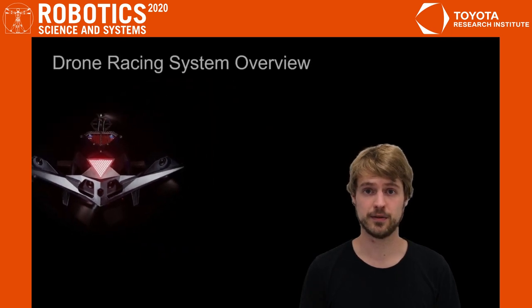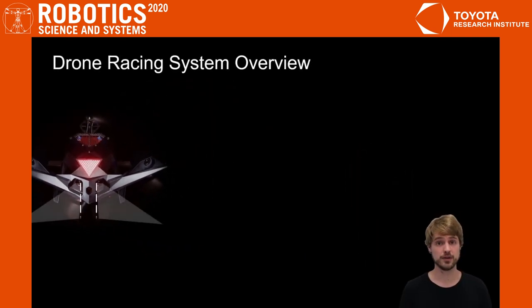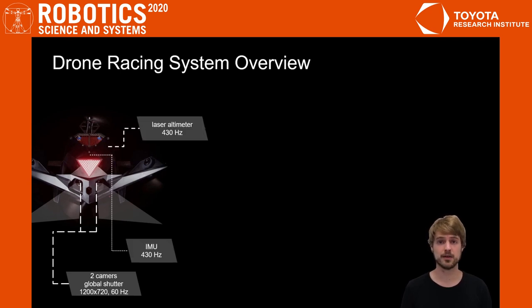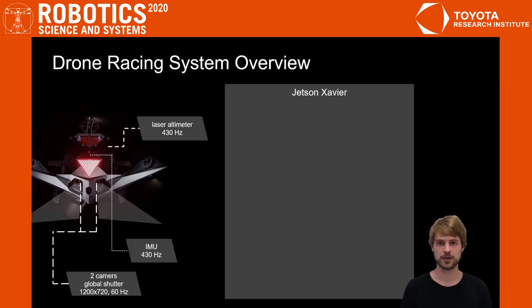Let's look at the system overview. Our drone is equipped with two front-facing cameras, an IMU and a laser altimeter. All computation runs on board on a Jetson Xavier.